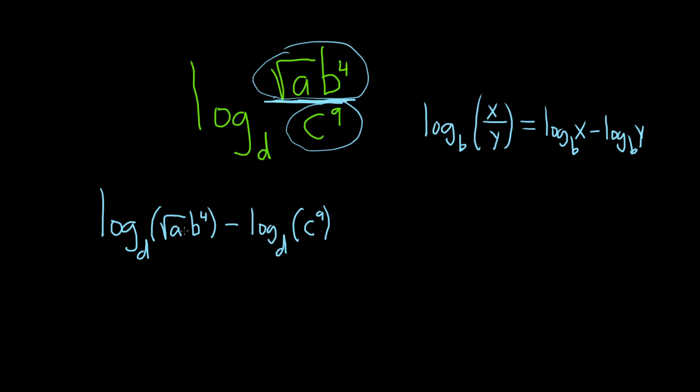In the next step, we can use the product rule. Whenever you have multiplication, it turns into addition. The rule says if you have log base b of x times y, that's equal to the log base b of x plus the log base b of y.